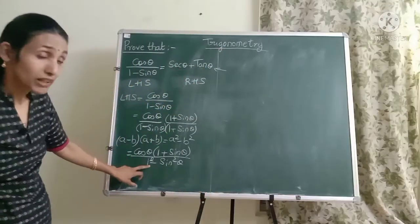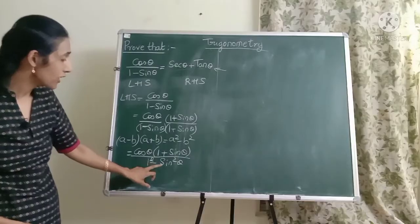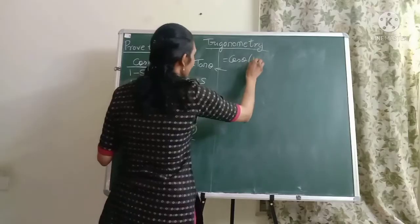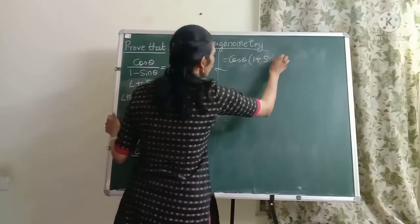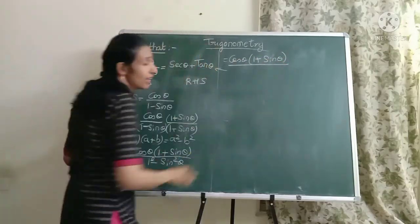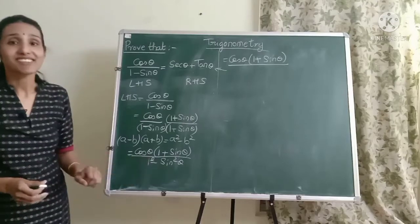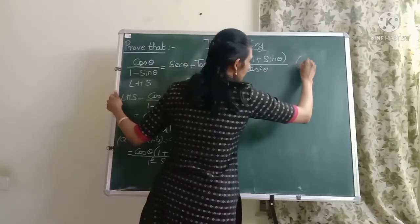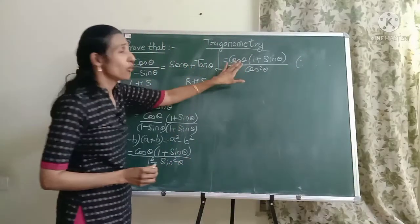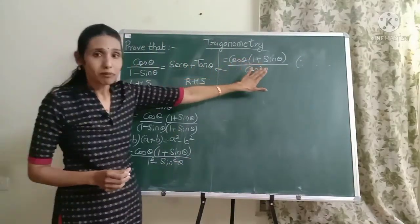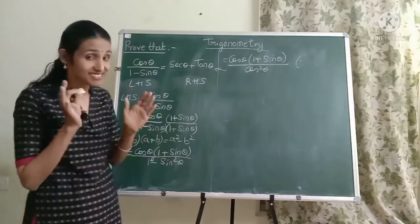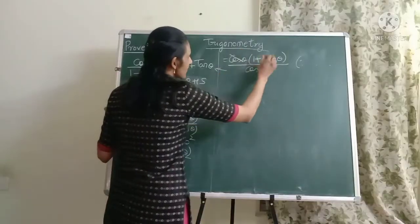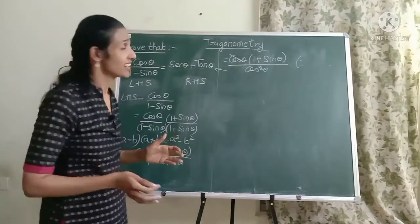So can you tell me what will happen in the next step? 1 square minus sin square theta. Does that look familiar to you friends? Keep the numerator as it is. Okay don't do anything. What is 1 minus sin square theta? Yes it is nothing but cos square theta. You write the reason over here friends. Now you have cos theta into 1 plus sin theta divided by cos square theta. So is there anything to be cancelled? Definitely. You have 1 cos theta which can be cancelled. Just see friends.